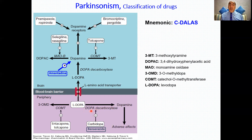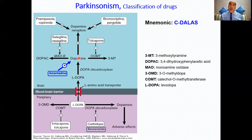So we use peripheral decarboxylase inhibitors — carbidopa and benserazide — to prevent L-DOPA from being converted into dopamine in the periphery, allowing more L-DOPA to pass through the blood-brain barrier and be converted into dopamine in the brain. L stands for anticholinergics — central anticholinergics such as benztropine. S stands for selegiline, a monoamine oxidase inhibitor that inhibits dopamine degradation, thereby replenishing the amount of dopamine in the substantia nigra to activate dopamine receptors and control the clinical features of Parkinsonism.